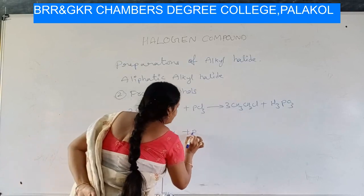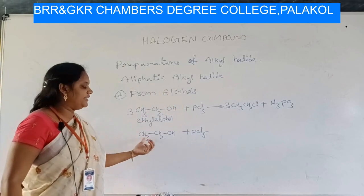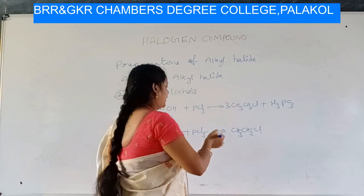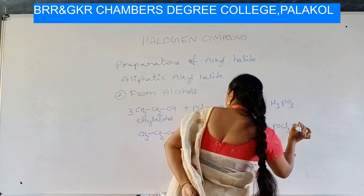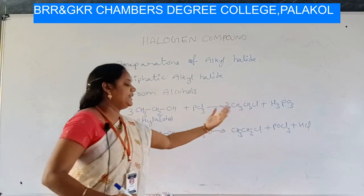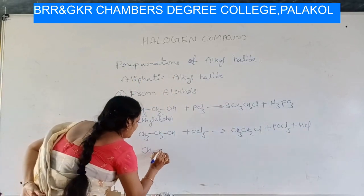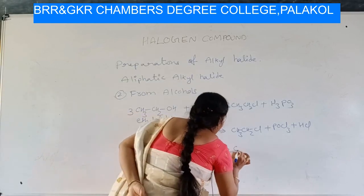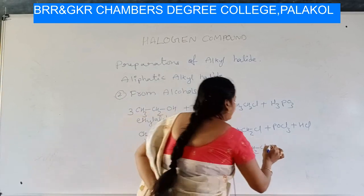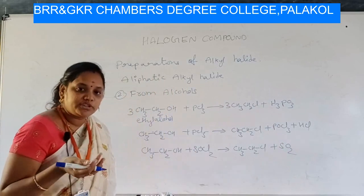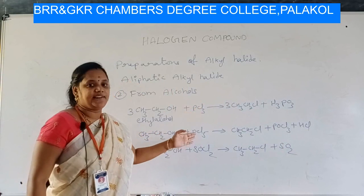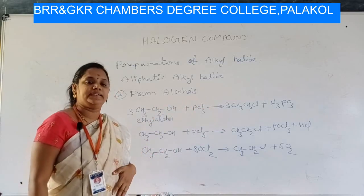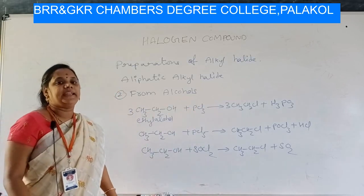If you treat ethyl alcohol with PCl₅, only one mole is enough. One mole of ethyl alcohol reacts with PCl₅ to give ethyl chloride (CH₃CH₂Cl) plus POCl₃ plus HCl as byproducts. If you treat ethyl alcohol with SOCl₂, the product will be ethyl chloride plus SO₂. Using these three different reagents — PCl₃, PCl₅, and SOCl₂ — we can easily prepare alkyl halides such as ethyl chloride.